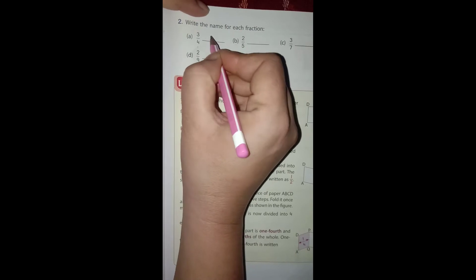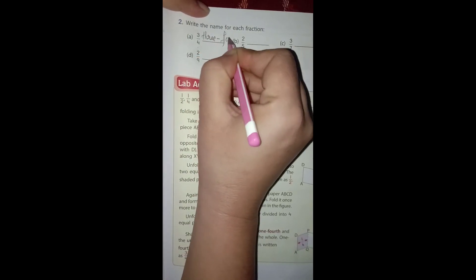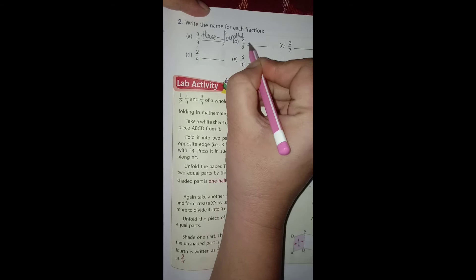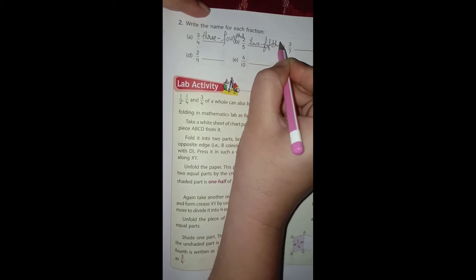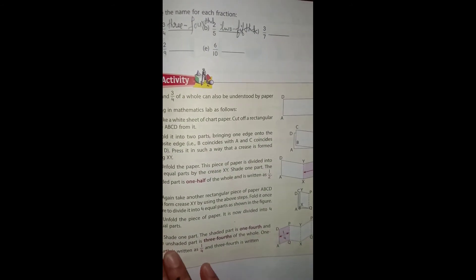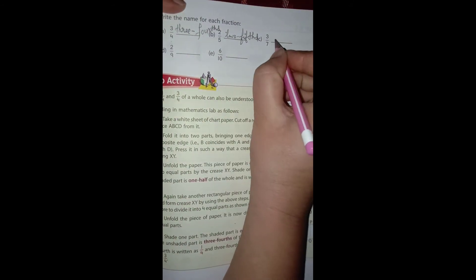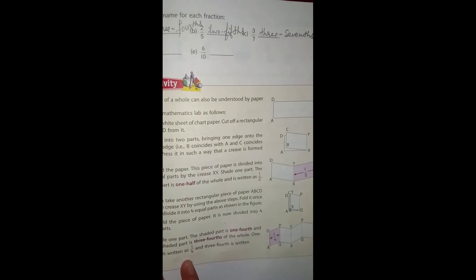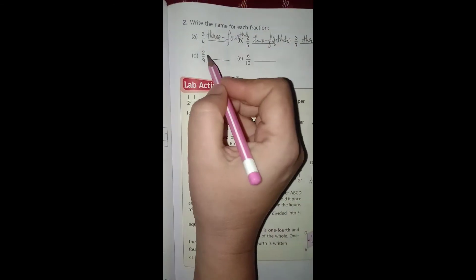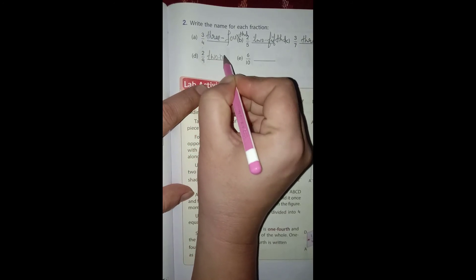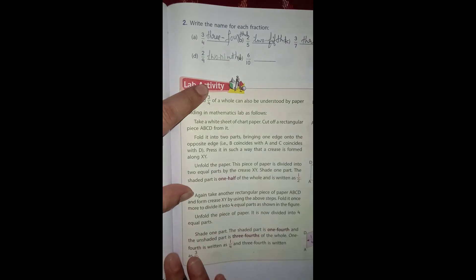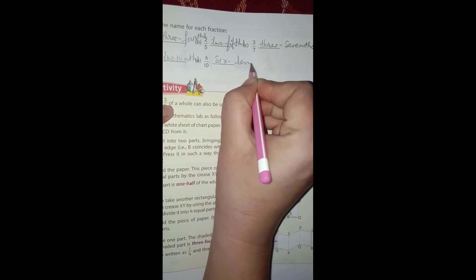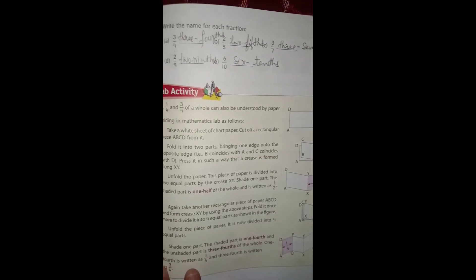3/4 means three-fourths. Then 2/5 means two-fifths. Then 3/7, it means three-sevenths. So dear students, this is how you can write the fraction names.